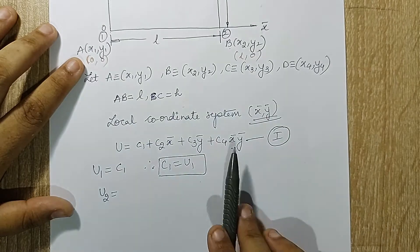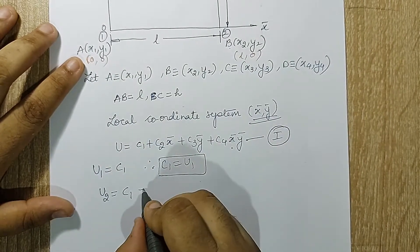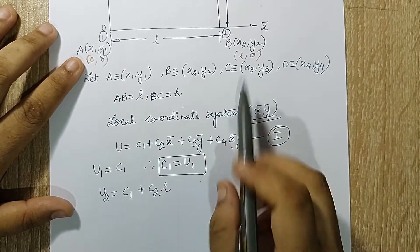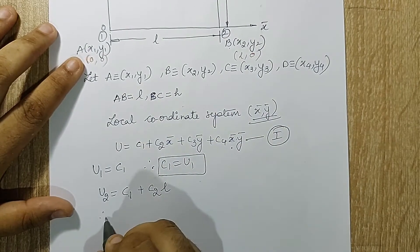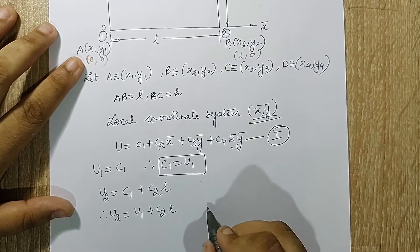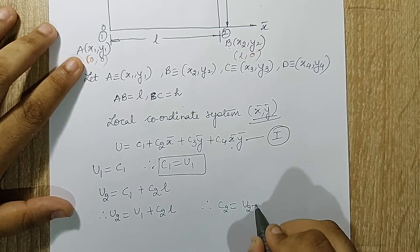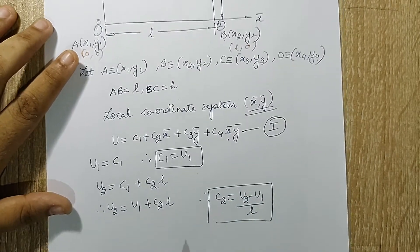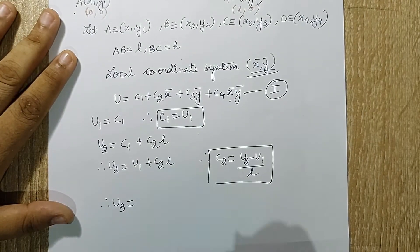For node 2, the value of x-bar is l and y-bar is zero. Substituting gives u2 = c1 + c2*l, since the y-bar terms become zero. Since c1 = u1, we get u2 = u1 + c2*l, therefore c2 = (u2 - u1) / l.